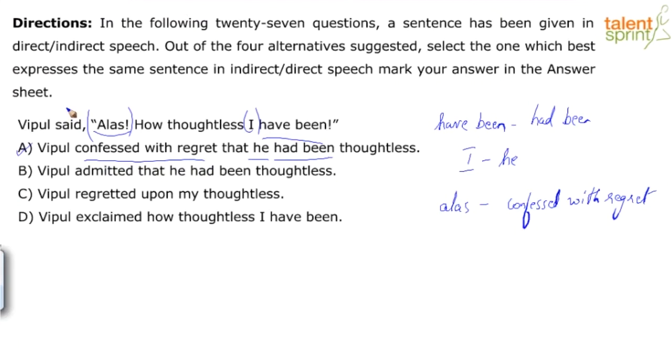Vipul admitted that he had been thoughtless. Vipul regretted upon my thoughtlessness. C is very illogical. Vipul explained how thoughtless I have been - incorrect because he's talking about himself. Just knowing that certain expressions like alas will change to this is more effective. The reason I'm saying this is you might be confused with B as well, which seems correct. But in terms of keeping in line with the sentence structure and paying attention to the exclamatory word expressing a particular feeling, he is regretting that he was thoughtless.